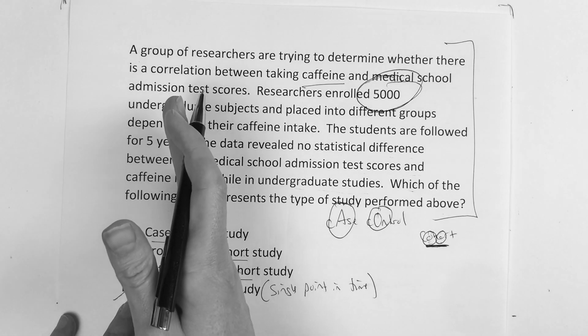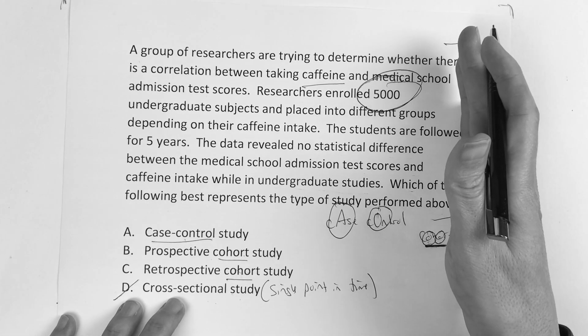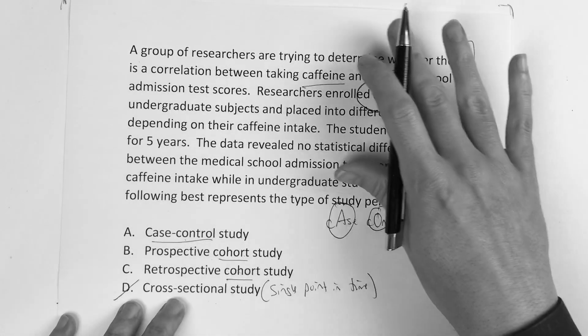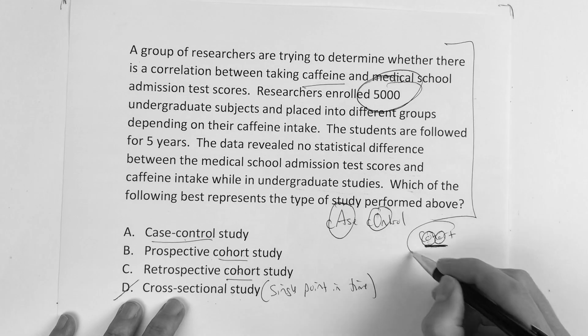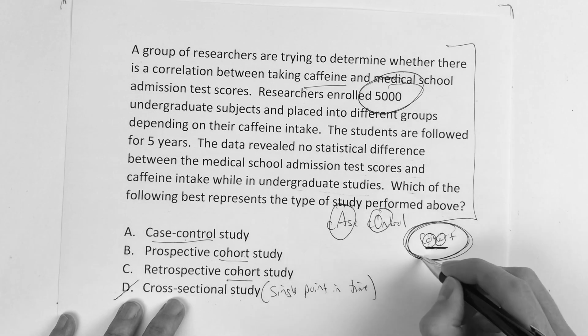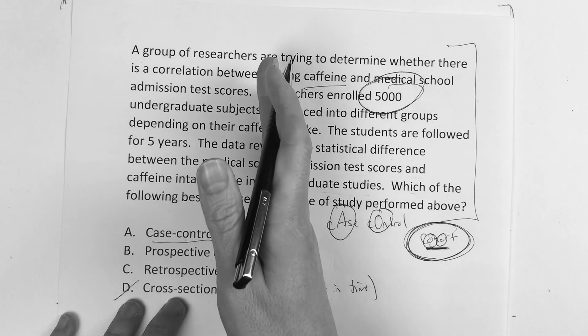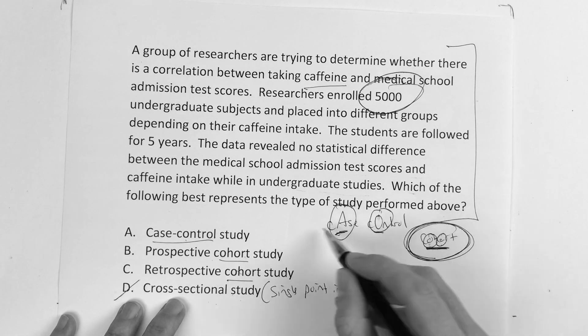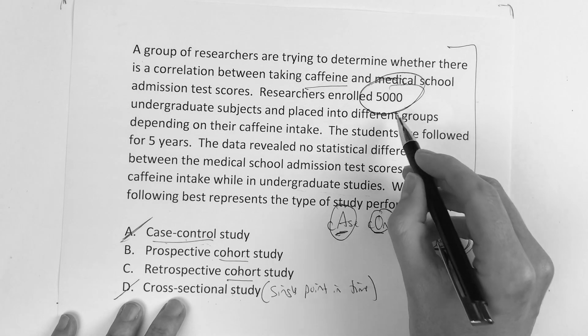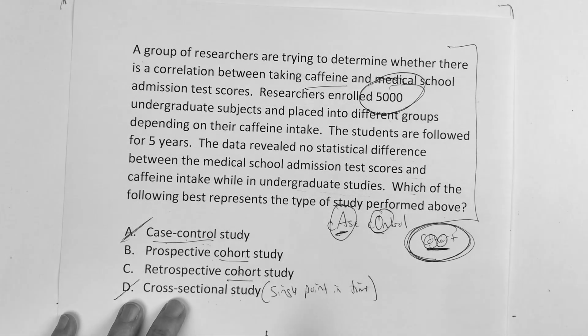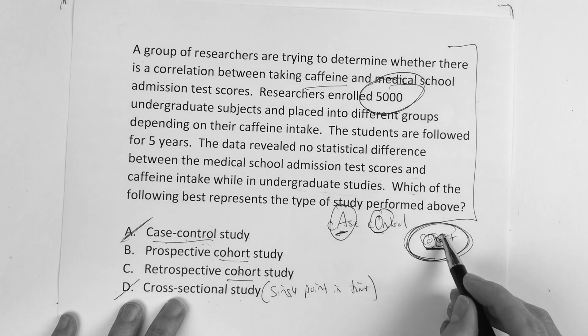If at the beginning of the study someone had cancer and someone did not, then you'd be jumping all over case control. But since nobody's in medical school in the beginning of the study, then it's definitely a cohort.